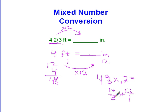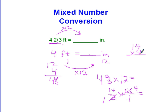I can cross cancel here before I do my multiplication. Divide by 3 and get 1, divide by 3 and get 4. So my problem is 1 times 1 on the bottom, which means it's just going to be a whole number. And I do 14 times 4. 4 times 4 is 16, carry the 1, 1 times 4 is 4 plus 1 is 5. So the answer is 56 inches.